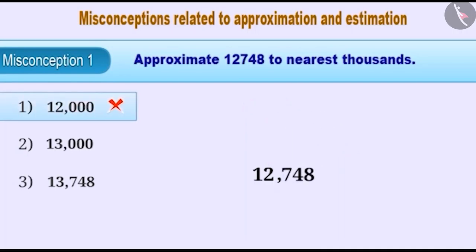The correct way is that the number formed by the last three digits is 748, which is close to 1000. Therefore, it is nullified and the thousands place value is increased by 1.